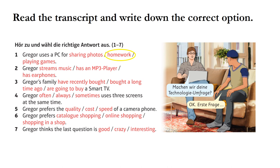Gregor uses a PC for homework. He has an MP3 player and his family have recently bought a smart TV. Gregor often uses three screens at the same time. He prefers the speed of a camera phone, and he prefers shopping in a shop rather than online. Gregor thinks the last question is crazy — he says 'Du spinnst,' meaning 'you're joking.'